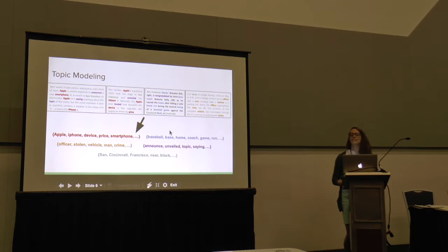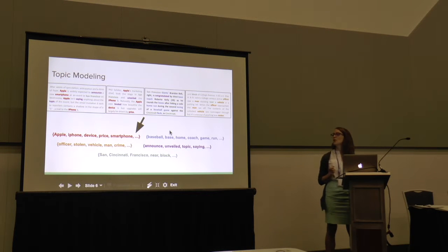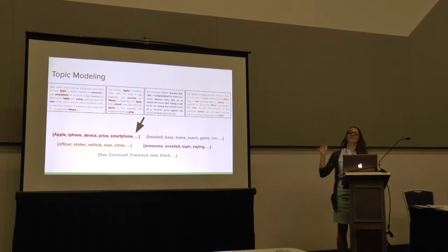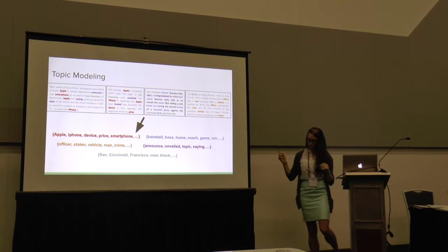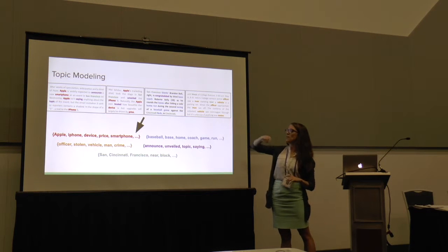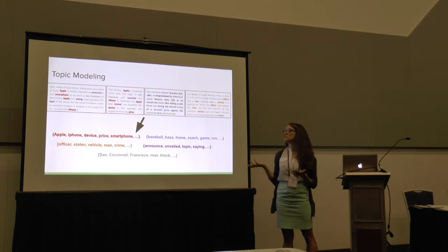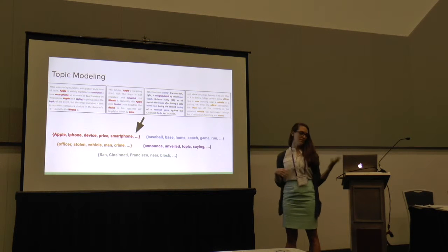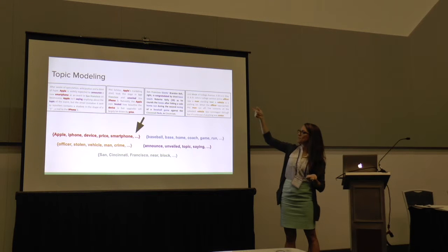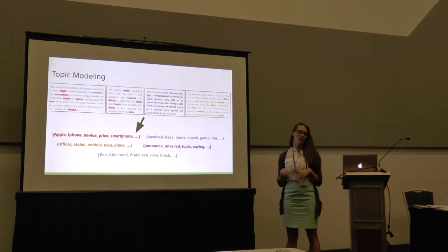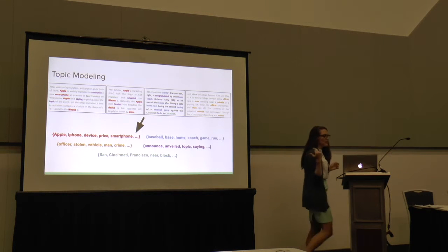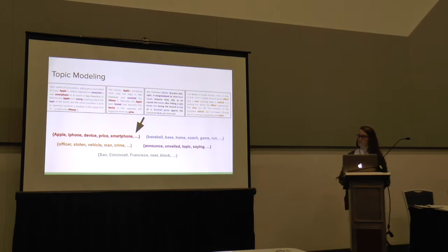Topic modeling is an example of document clustering. How topic modeling works is you take a collection of documents as input, and it automatically discovers the themes or topics of discussion from those documents. These are represented as ordered lists of words. For example, documents about the iPhone will use words like Apple, smartphone, device. Documents about baseball will use words like baseball, home run, coach, inning. So we can discover these topics from a document corpus.